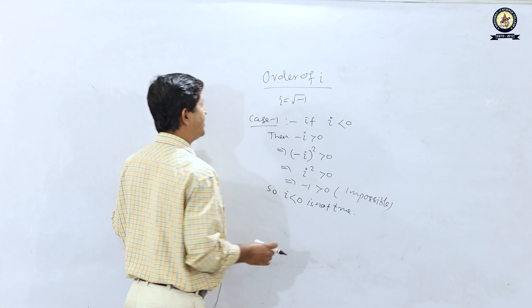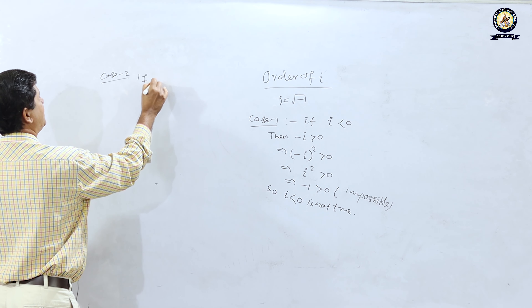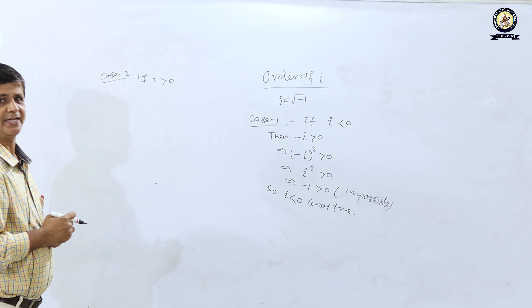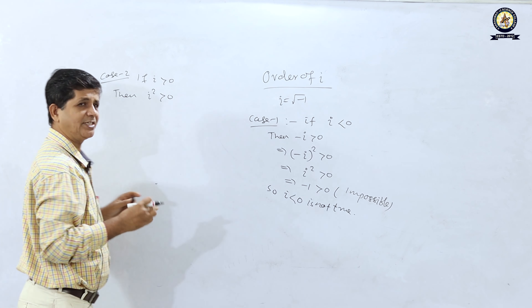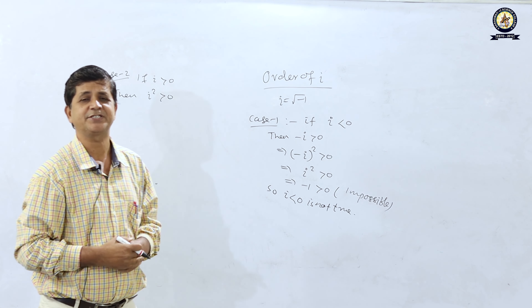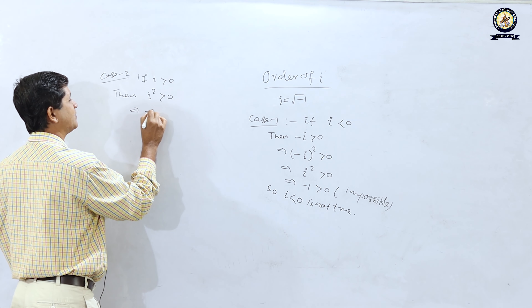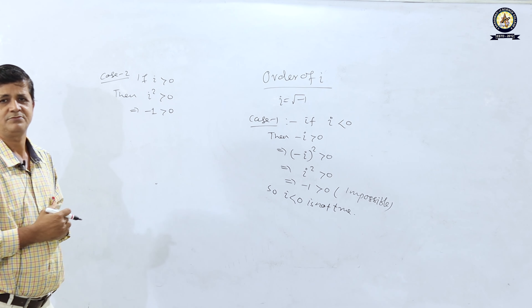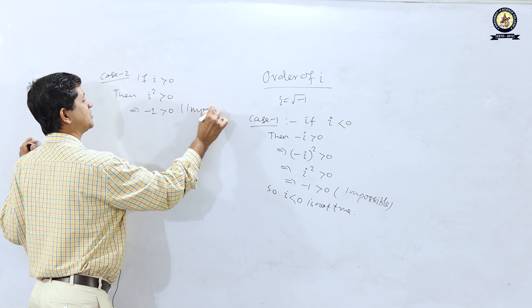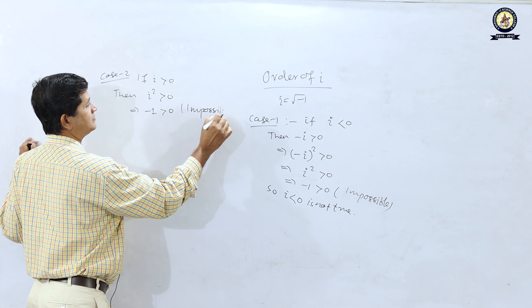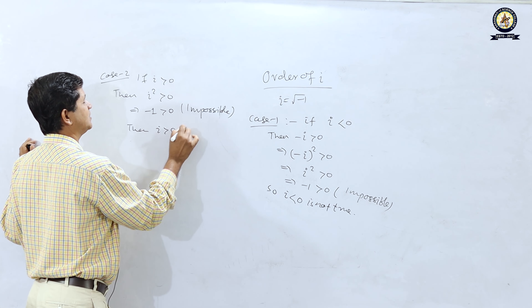Case 2: if i > 0, then i is positive. The square of a positive number is always positive, so i² > 0, meaning −1 > 0. This is also impossible. Therefore i > 0 is not true.